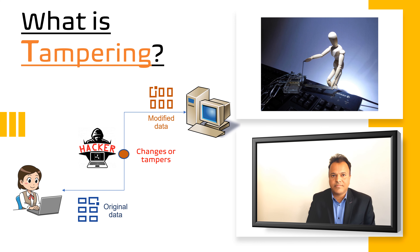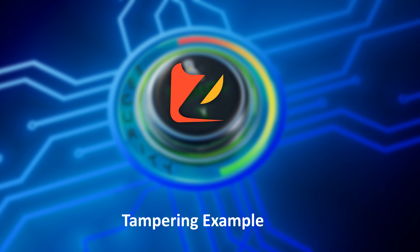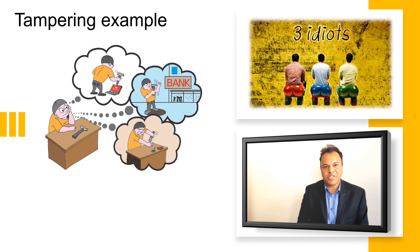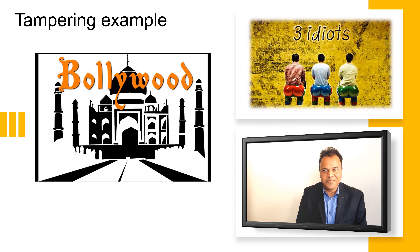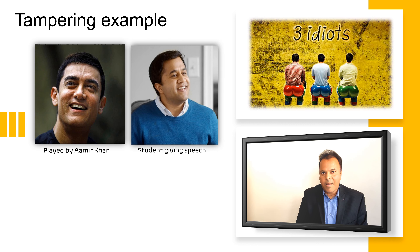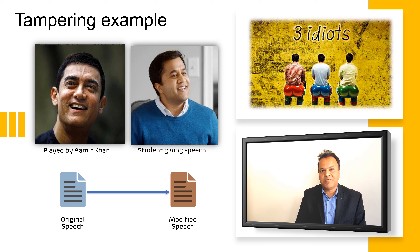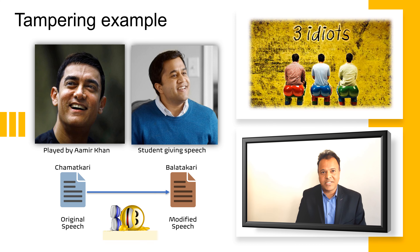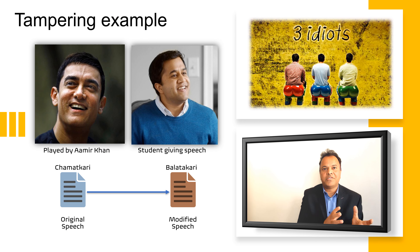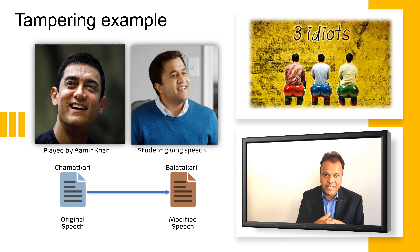A relatable example of tampering comes from the Bollywood movie Three Idiots, where Aamir Khan tampers with a student's speech by changing one word, turning it into something embarrassing — the student is nearly expelled and everyone gets very upset. Similarly, in a tampering attack, you take original data, change it, and it ends up meaning something entirely different.